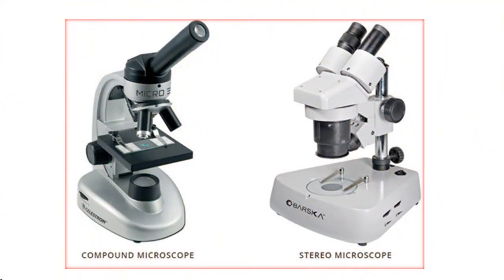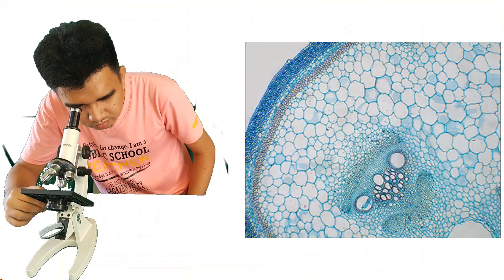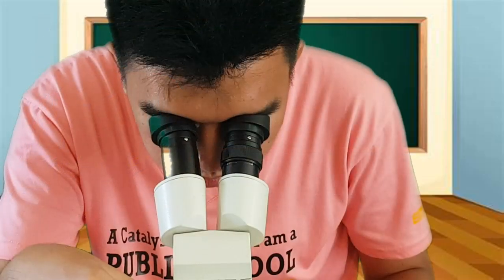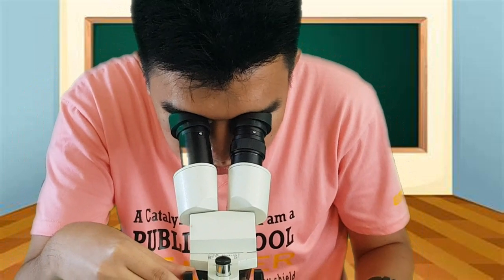A stereo or dissecting microscope is not the same as a compound microscope. Unlike the compound microscope, the image formed in a stereo microscope is upright and not upside down and backward. A compound microscope yields a single optical path resulting in the same image to both the left and the right eye, whereas a stereo microscope provides two optical paths resulting in a three-dimensional view.